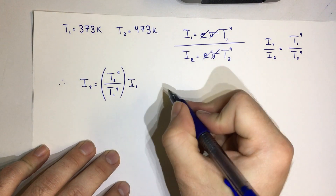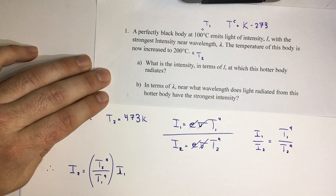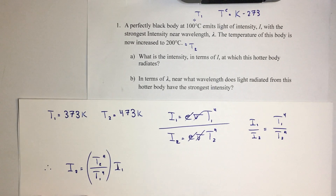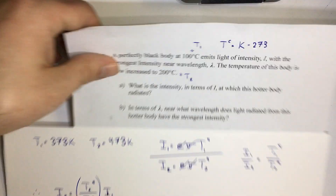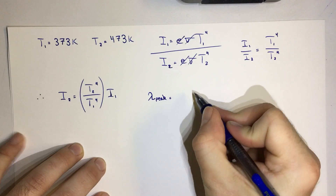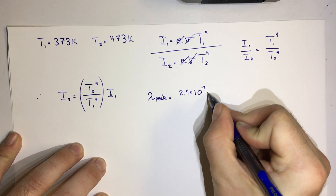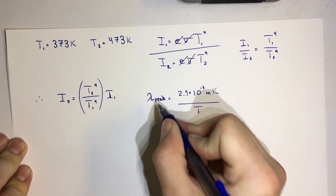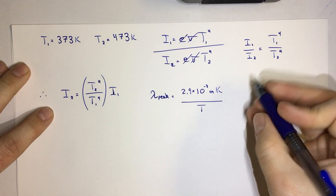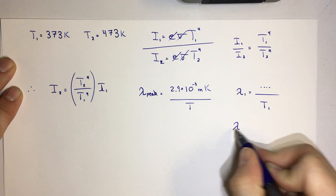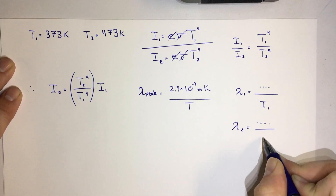That gives us the first part, but we still have to determine what happens to the wavelength. In terms of lambda 1, near what wavelength is light radiated at the strongest intensity — what is lambda 2? We'll perform a similar operation using Wien's displacement law. The peak wavelength of emission equals the constant 2.9 times 10 to the negative 3 meters·Kelvin divided by the temperature. So lambda 1 equals this constant divided by T1, and lambda 2 equals this constant divided by T2.